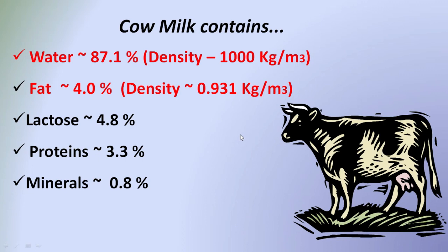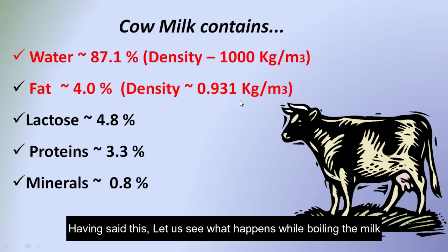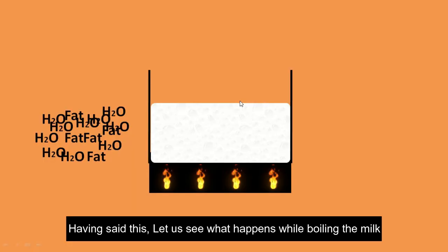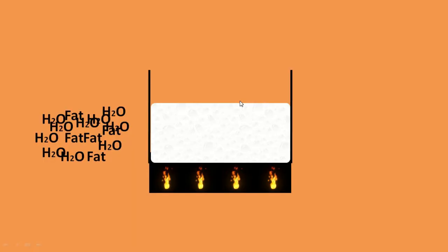You can also notice that the density of fat is lesser than that of water. The density of water is 1000 kg per cubic meter, whereas the density of fat is slightly lesser at 931 kg per cubic meter.